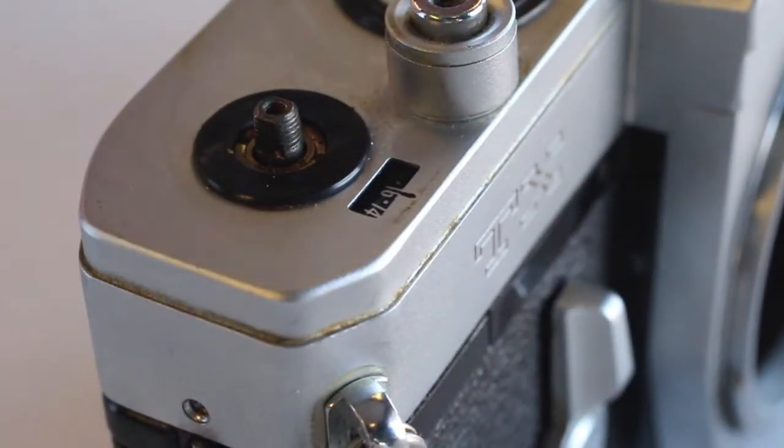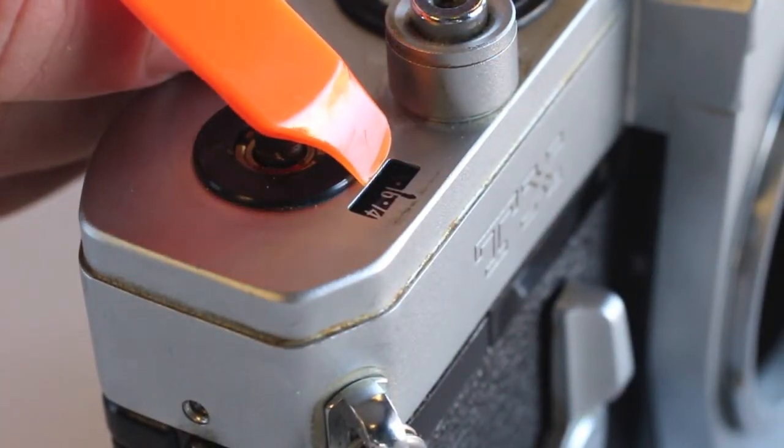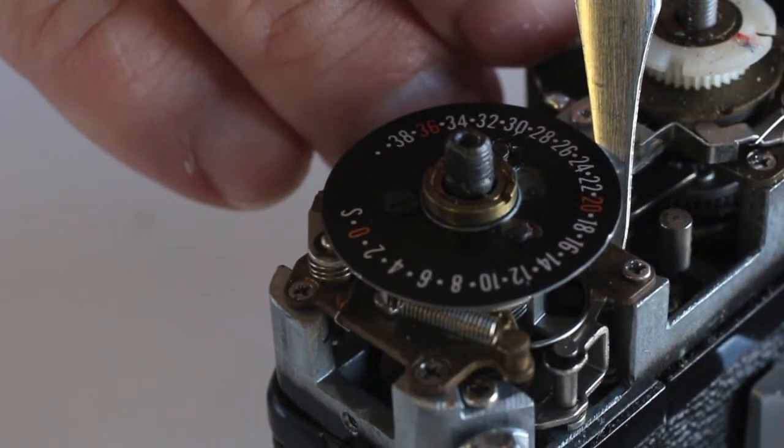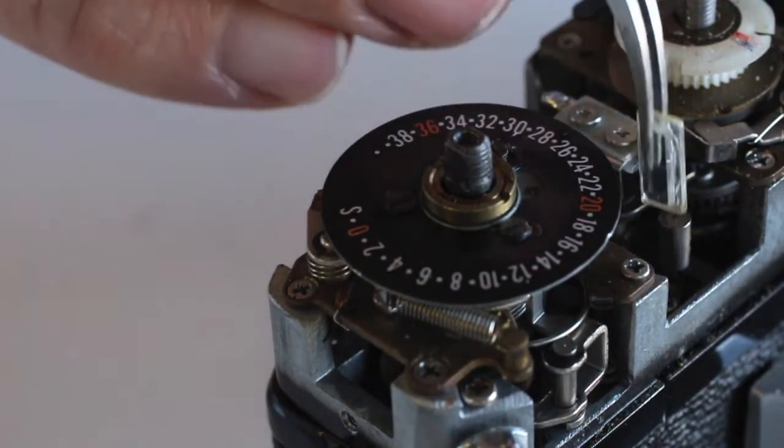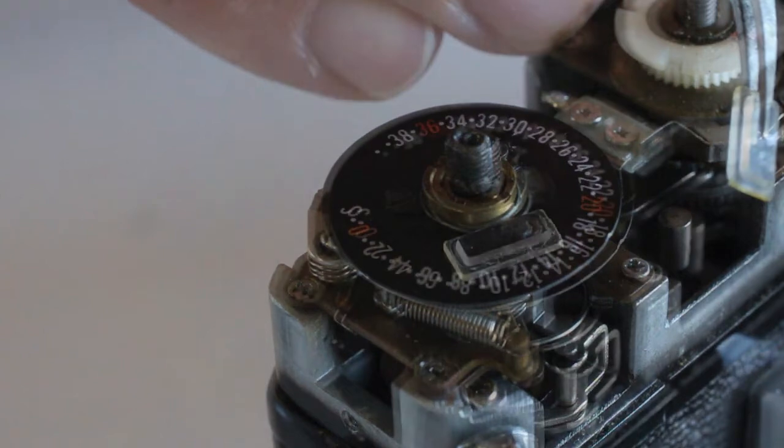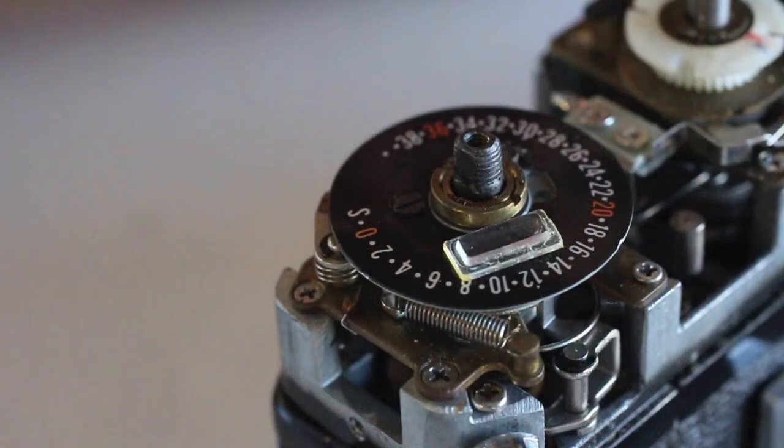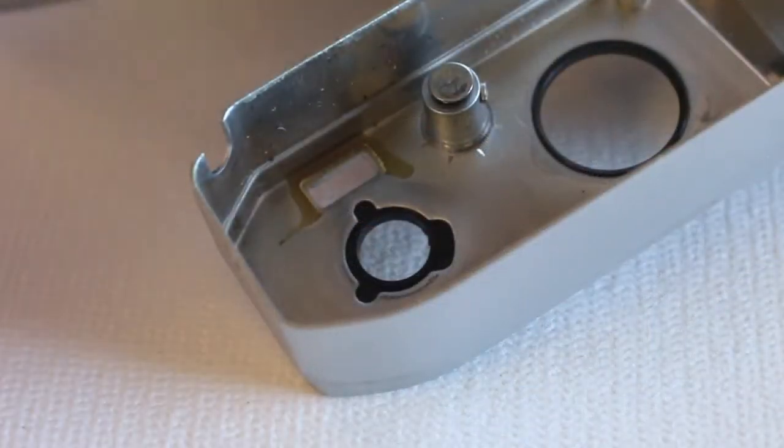The missing counter window generally falls into the front of the wind mechanism. Tweezers can be used to work the counter window free of the mechanism. Once free, the counter window will need to be glued back to the top cover.